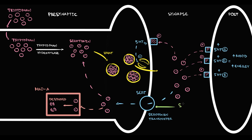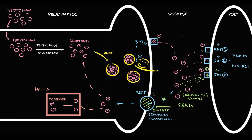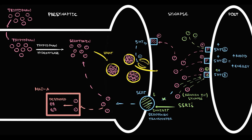Selective serotonin reuptake inhibitors inhibit the function of the SERT transporter. With inhibition of SERT, the reuptake of serotonin into the presynaptic neuron decreases, so more serotonin molecules remain in the synapse. These serotonin molecules begin to bind to serotonin receptors, additionally stimulating them. With time, because serotonin transporter is now blocked, even more serotonin molecules accumulate in the synapse. The higher the amount of serotonin in the synapse, the higher the stimulation of serotonin receptors, and thereby potentially the better the mood and the more energy increases.